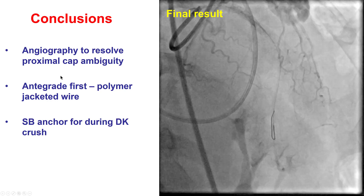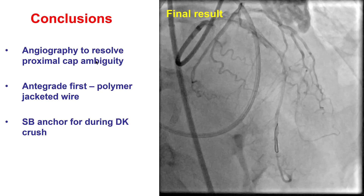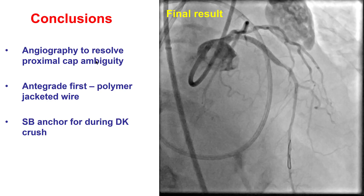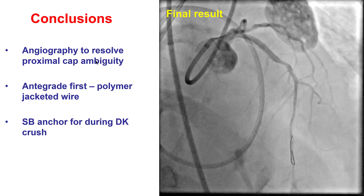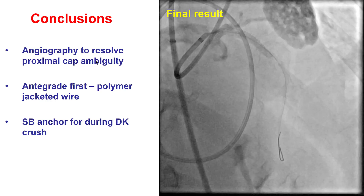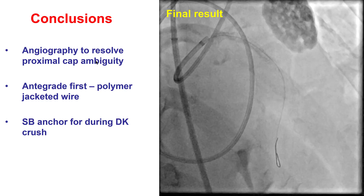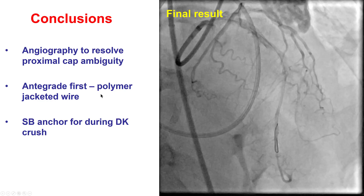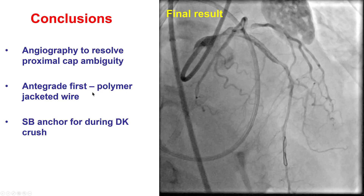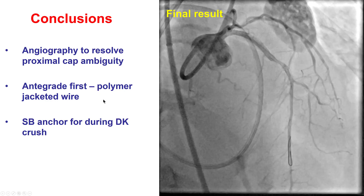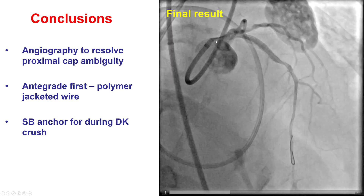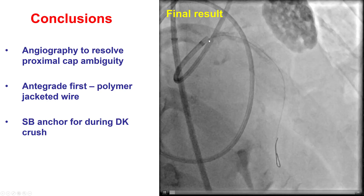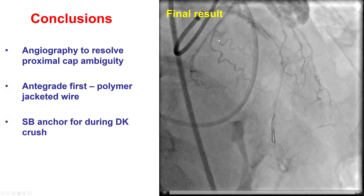Multiple lessons from this case. First, angiography with multiple projections — especially caudal views — and intravascular ultrasound can resolve proximal cap ambiguity and identify an entry point into a CTO, even when ambiguous. When ambiguity exists, it is best to avoid highly penetrating wires like the Confianza, Hornet, and Warrior, and instead use polymer-jacketed wires that are less likely to perforate. Finally, in the two-stent technique for the left main bifurcation, difficulty delivering balloons after rewiring can be resolved with the side branch anchoring technique. Thank you.